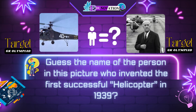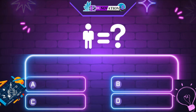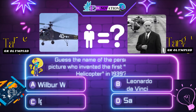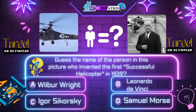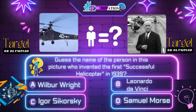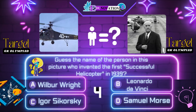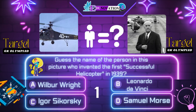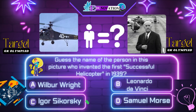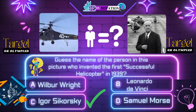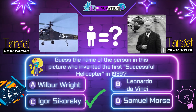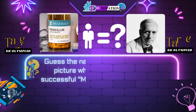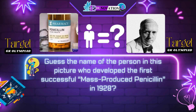Next question. Guess the name of the person in this picture who invented the first successful helicopter in 1939. Your options are: A. Wilbur Wright, B. Leonardo da Vinci, C. Igor Sikorsky, D. Samuel Morse. Time's up. Correct answer is C. Igor Sikorsky.